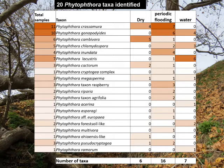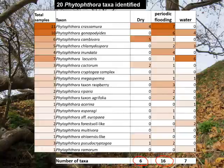One thing we noticed is that most of the Phytophthoras are found in areas that tend to be at least periodically quite wet or subject to wet conditions. We still detect Phytophthoras under dry conditions, but there are fewer taxa found in those locations. And you'll also see that there's overlap between these, with some species picked up much more frequently than others.